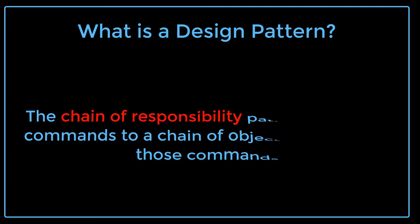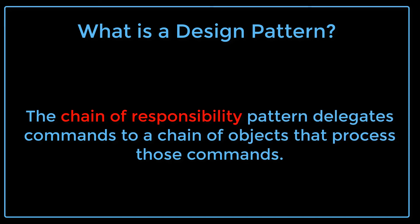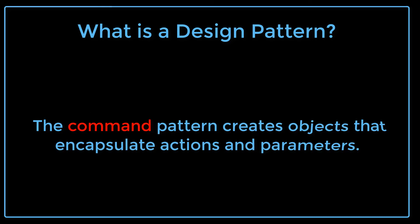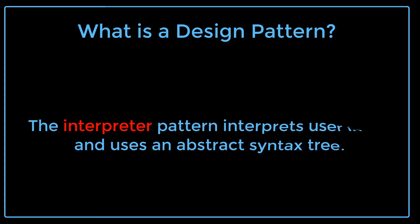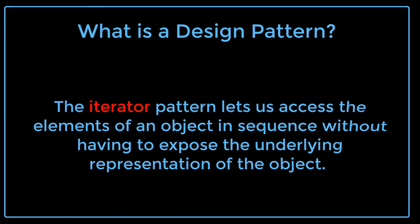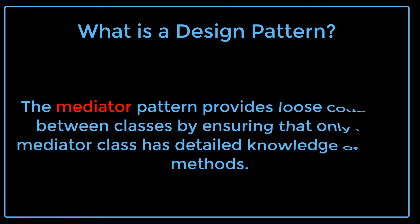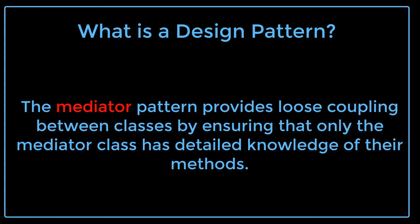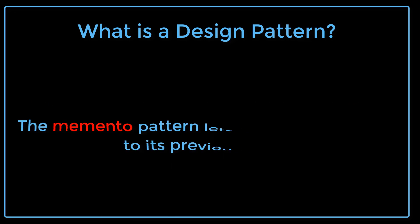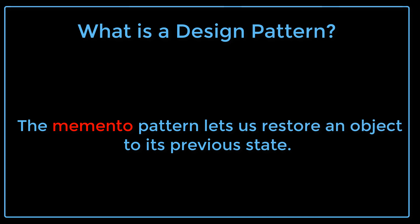The Chain of Responsibility pattern delegates commands to a chain of objects that processes those commands. The Command pattern creates objects that encapsulate actions and parameters. The Interpreter pattern interprets user input and uses an abstract syntax tree. The Iterator pattern lets us access the elements of an object in sequence without exposing the underlying representation of the object. The Mediator pattern provides loose coupling between classes by ensuring that only the Mediator class has detailed knowledge of their methods. The Memento pattern lets us restore an object to its previous state.